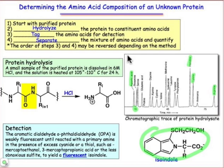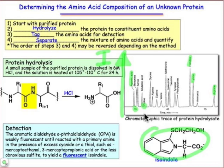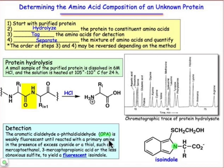The y-axis is fluorescence intensity, and so we can quantify the intensity as being directly proportional to the concentration of the different amino acids. You'll notice that proline doesn't hardly show up, and that's because only primary amines will react with the dialdehyde OPA to make the isoindole structure. So let's take a look at that chemistry.